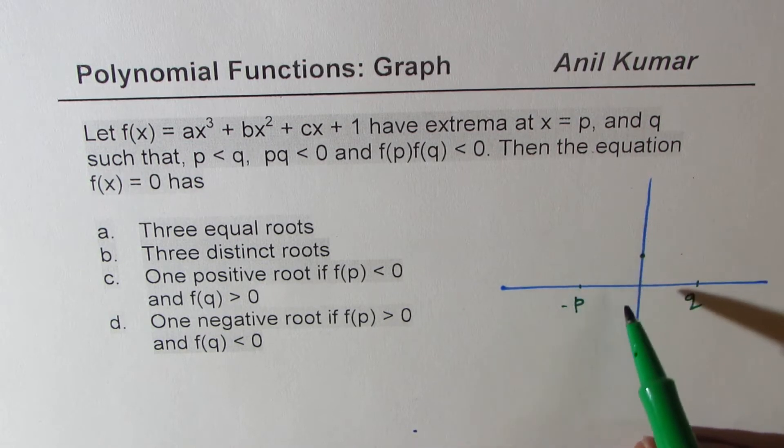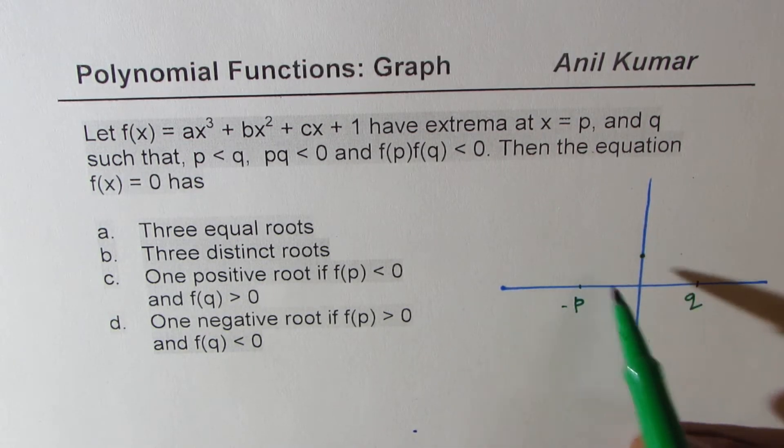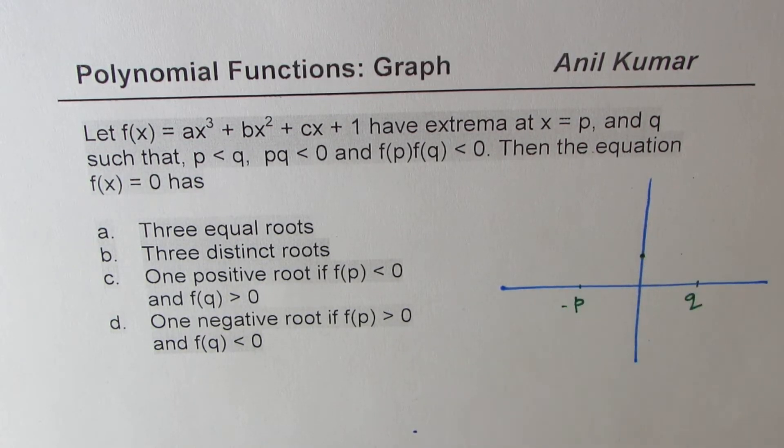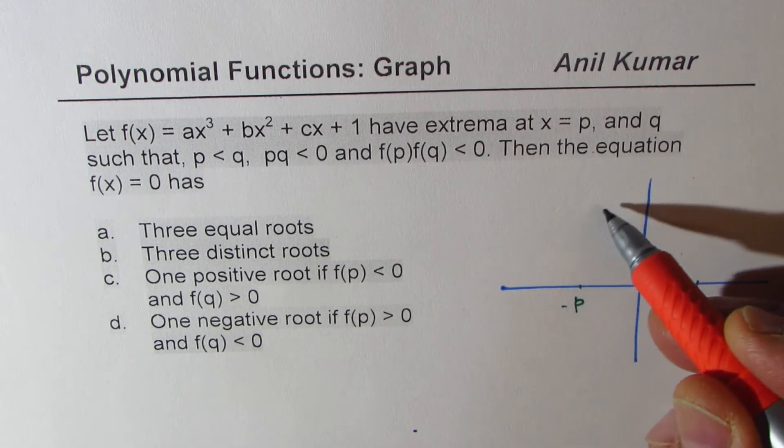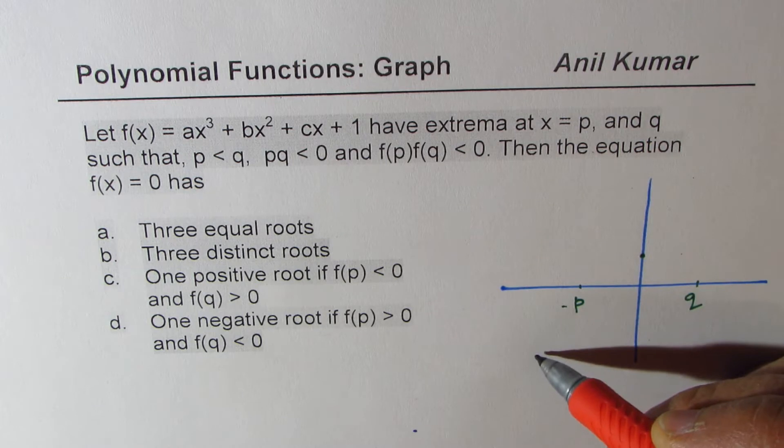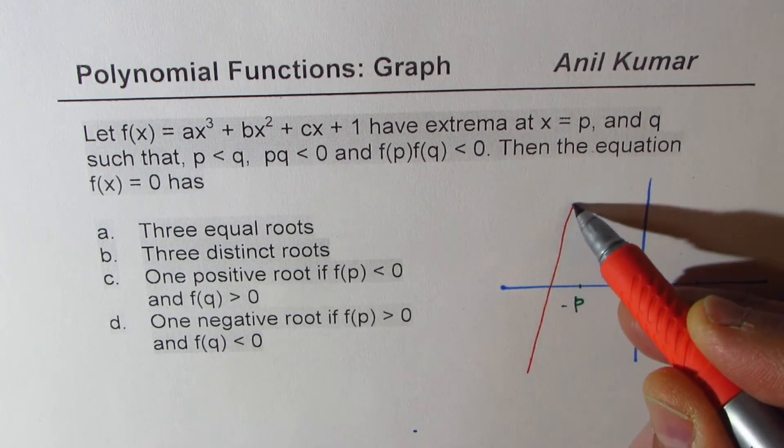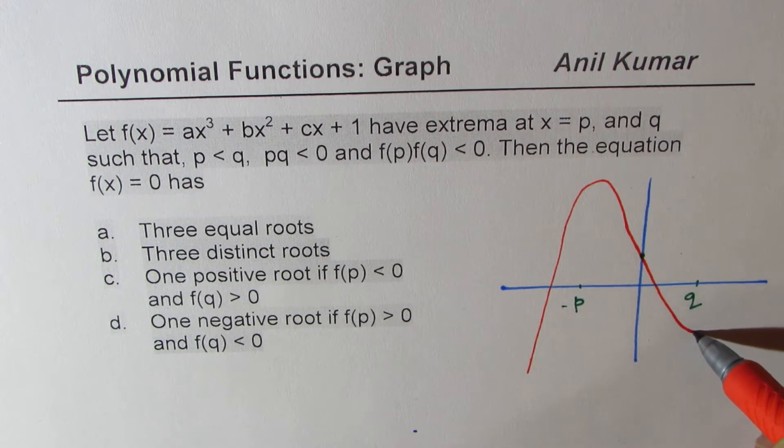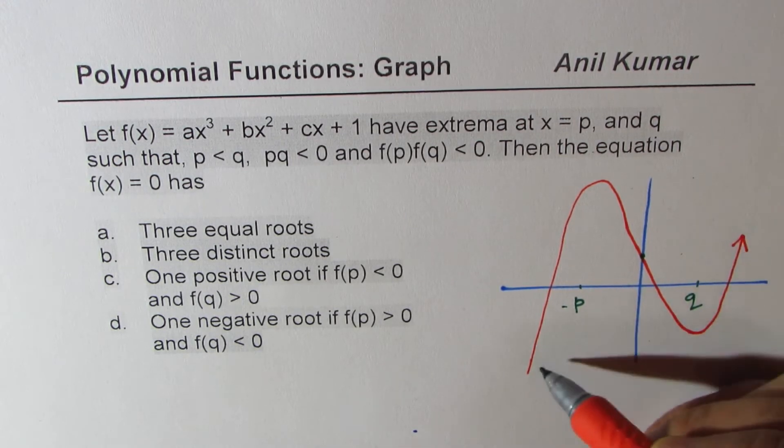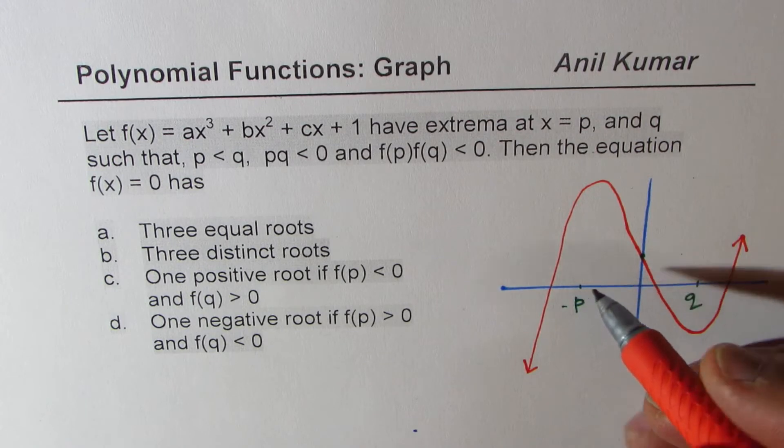And we have maximum, extrema, maximum or minimum. So basically, we are looking for two scenarios. One, if we have a maximum here, kind of like this. So think like this. We could have something like this. At p, we have maximum, and it has to go like this. And then from q, that could be one graph. Do you see that?